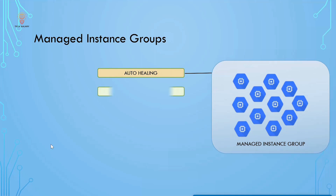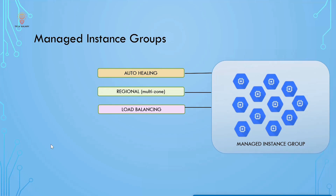It also provides regional coverage. Using regional Managed Instance Groups, you can spread application load across multiple zones. This kind of replication protects against zonal failures. For example, if one zone is not responding, your application can continue serving traffic from instances running in the remaining available zones in the same region. It also provides load balancing, distributing traffic across all the instances in the group.